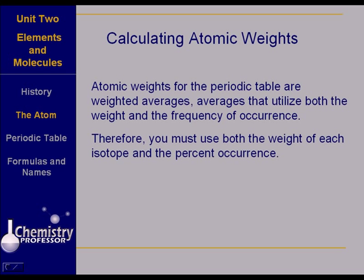So you must use both the weight of each isotope and its percent occurrence when you are figuring the weight that should be recorded on the periodic table, that is going to be representative of the average weight of that particular atom.